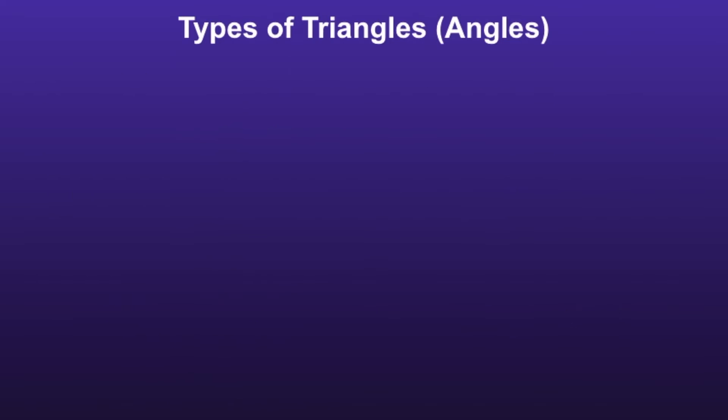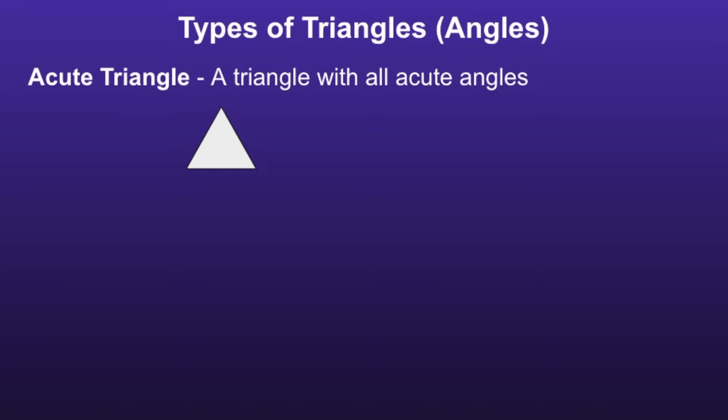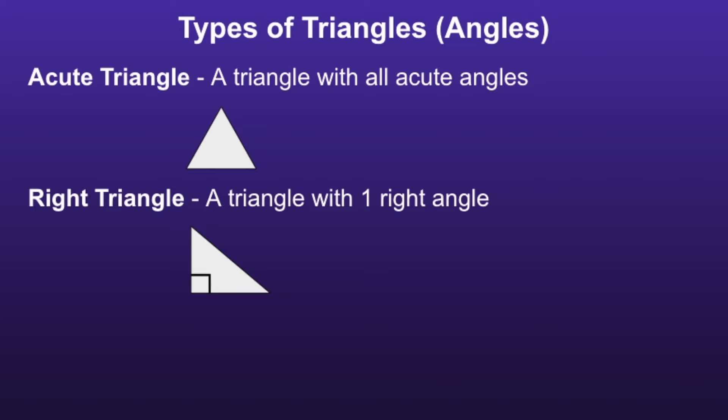So now let's look at the types of triangles, focusing on their angle measures. An acute triangle is a triangle with all acute angles. A right triangle is a triangle with one right angle.